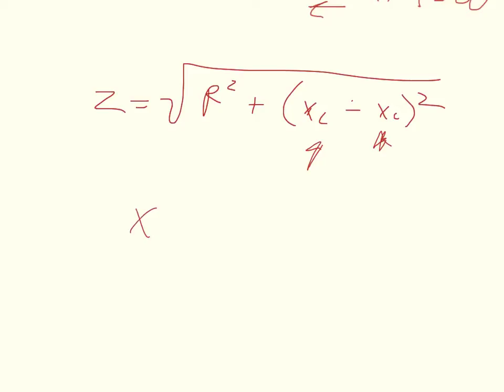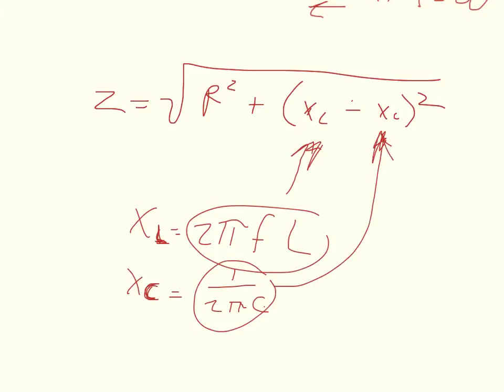We don't know what the inductive reactance or the capacitive reactance are, so we're going to have to substitute. The inductive reactance equals 2π times the frequency times the inductance. The capacitive reactance equals 1 over 2π times the frequency times the capacitance.